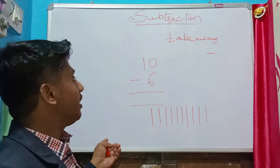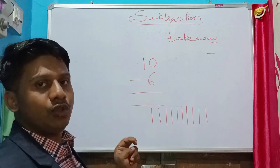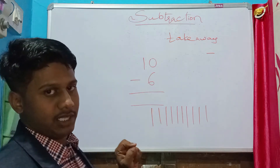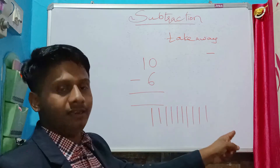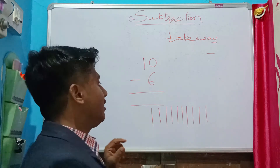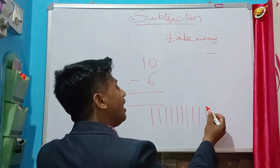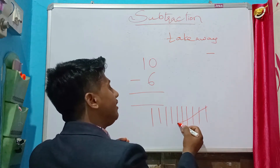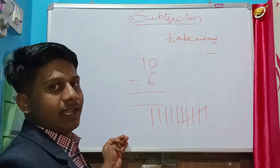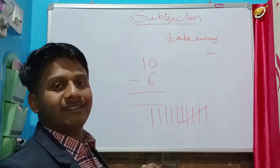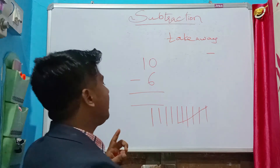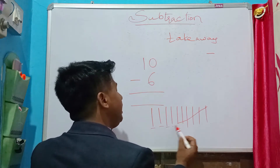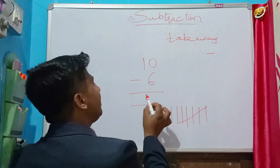Out of 10 lines, minus 6 — what does that mean? Out of 10 I have to take away 6. So let's take out six: one, two, three, four, five, six. I cancelled six lines, so the remaining lines are: one, two, three, four. So the answer is 4.